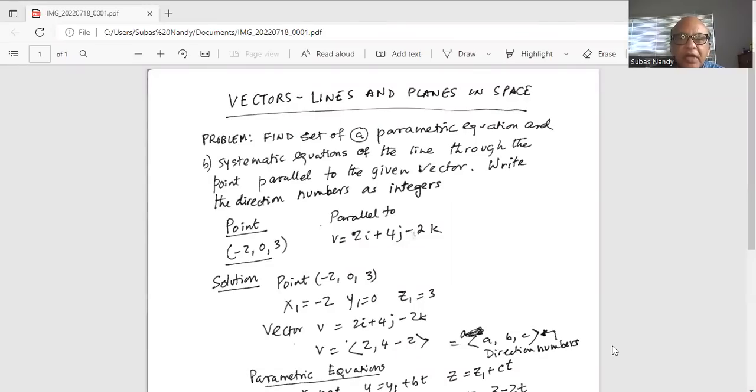Problem is find a set of parametric equations, part A and part B, symmetric equations of the line through the point parallel to the given vector. Write the direction numbers as integers.